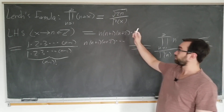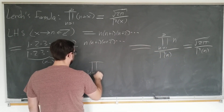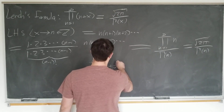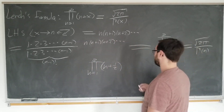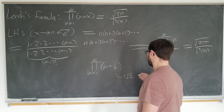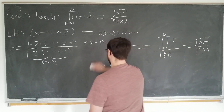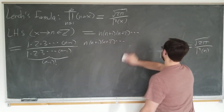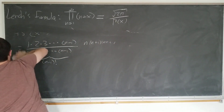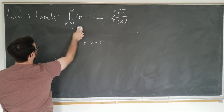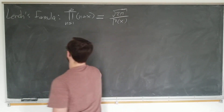This only holds for integer n, but we want a formula that holds for general x. For example, it would be quite nice to have the product of (n + 1/2), which is used pretty frequently. So let's go ahead and derive a formula suitable for all real numbers.